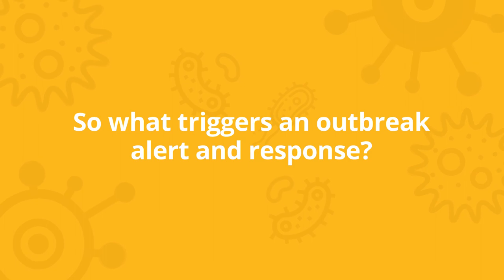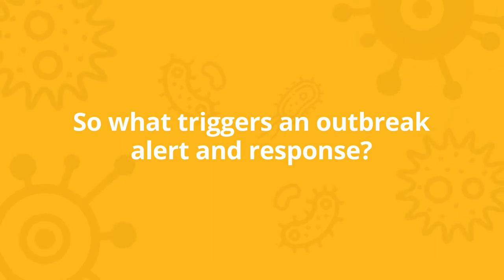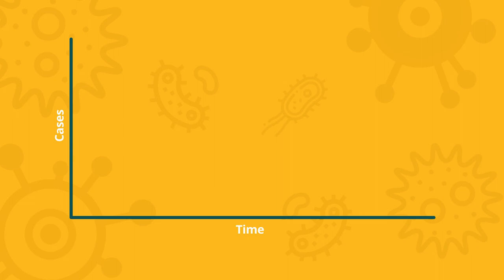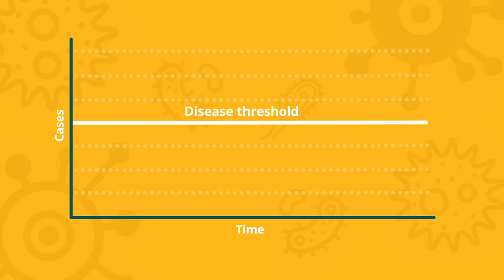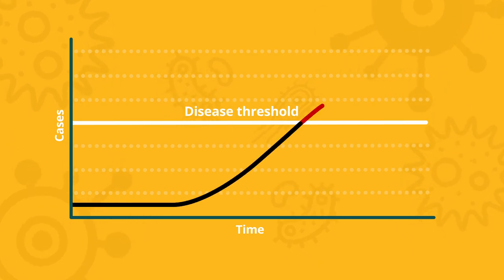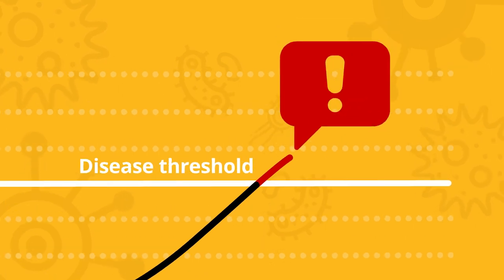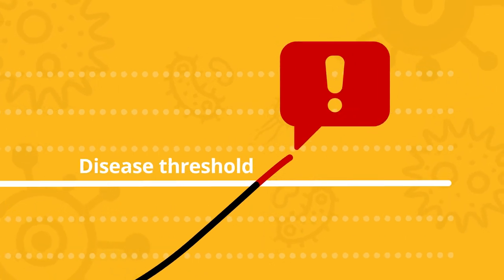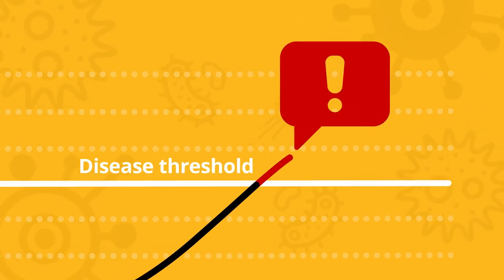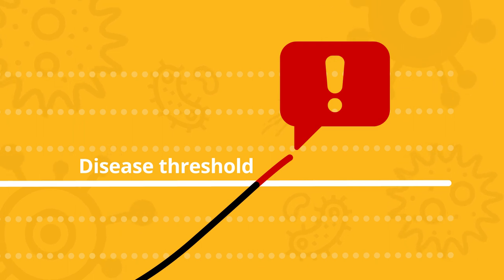What triggers an outbreak alert and response? A country's health authorities set disease-specific thresholds based on international guidance, which trigger an outbreak alert. Alerts are set depending on what's normal for that location and the risk of transmission.